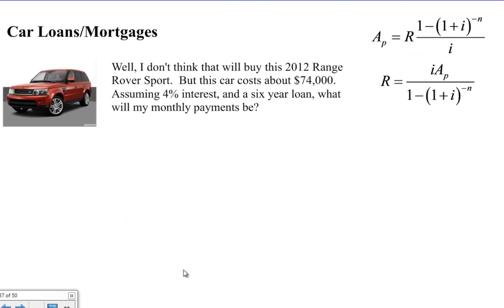Now, I don't think that's going to buy a 2012 Range Rover Sport but this car costs approximately $74,000 and if we assume 4% interest and a six-year loan, so we're lengthening the loan, what will my monthly payments be?